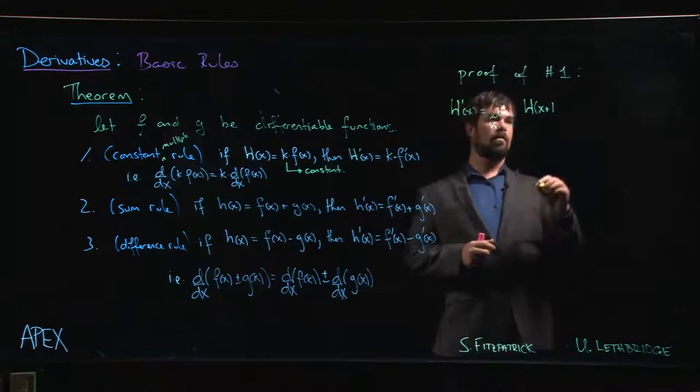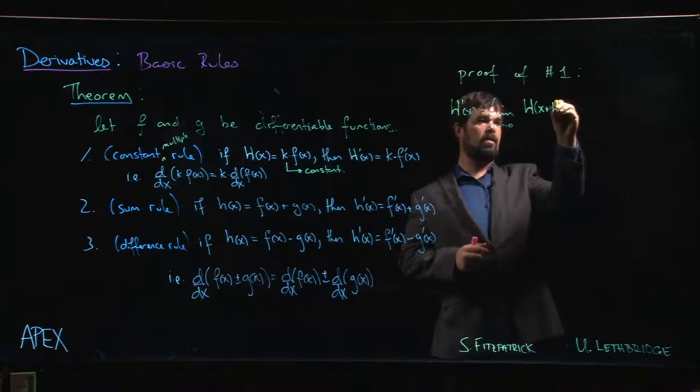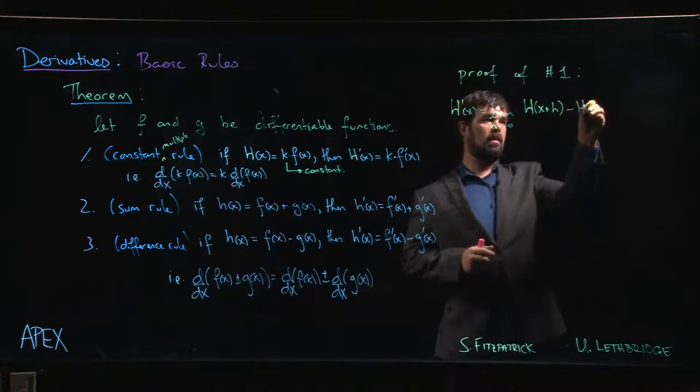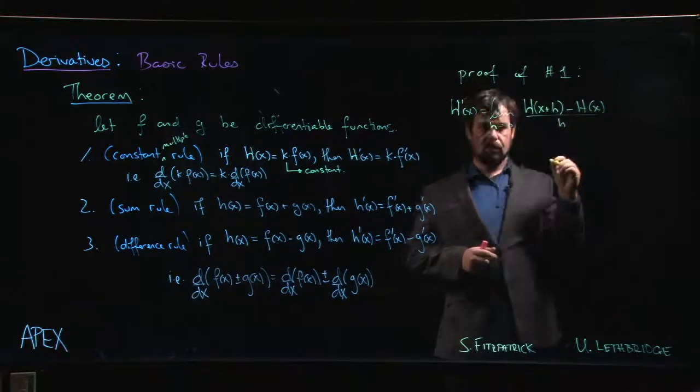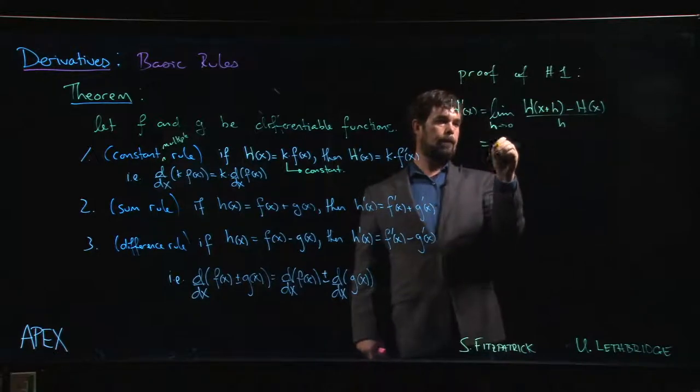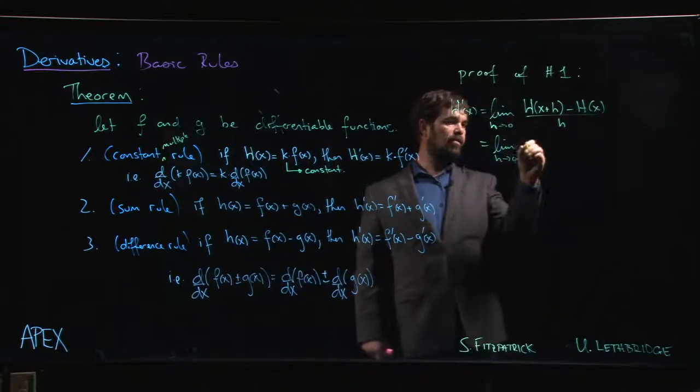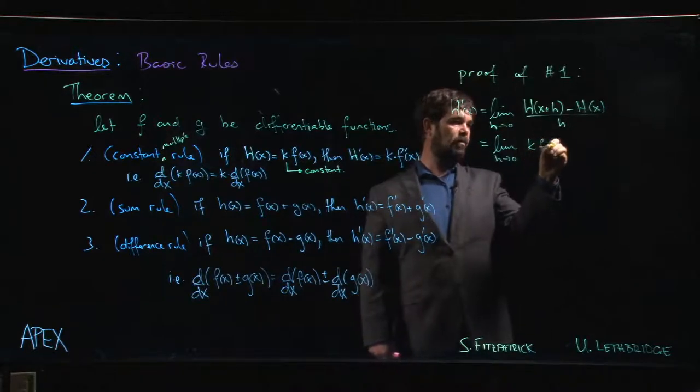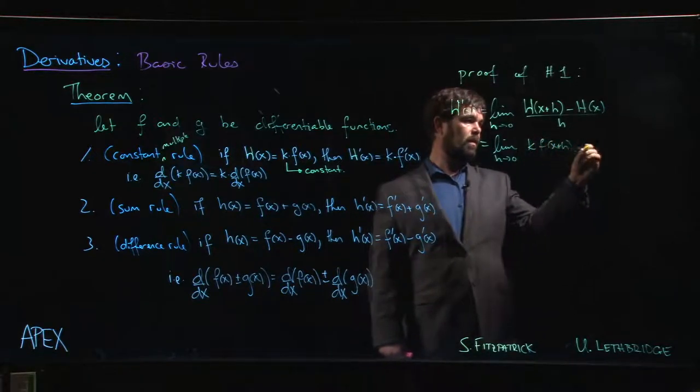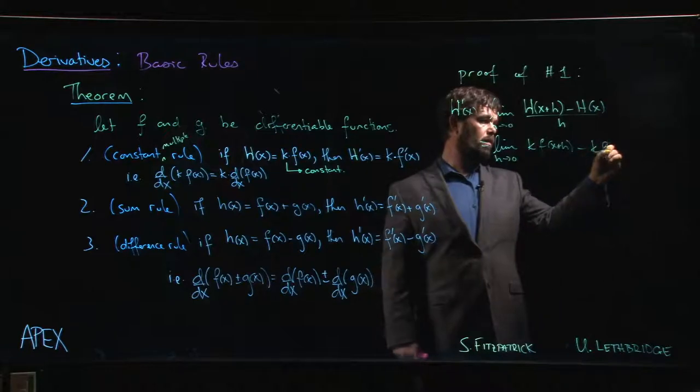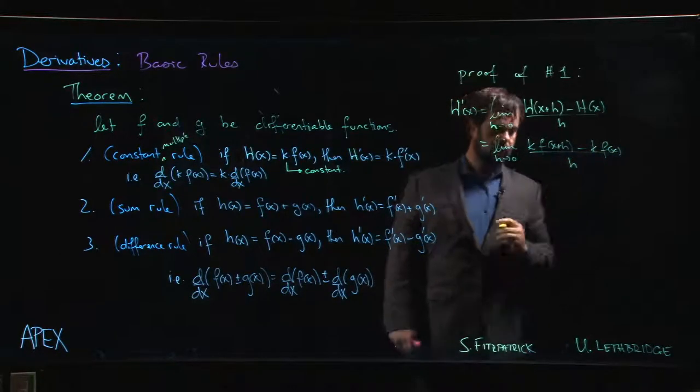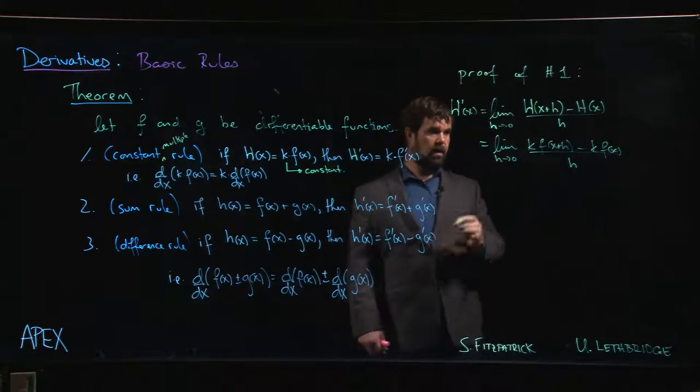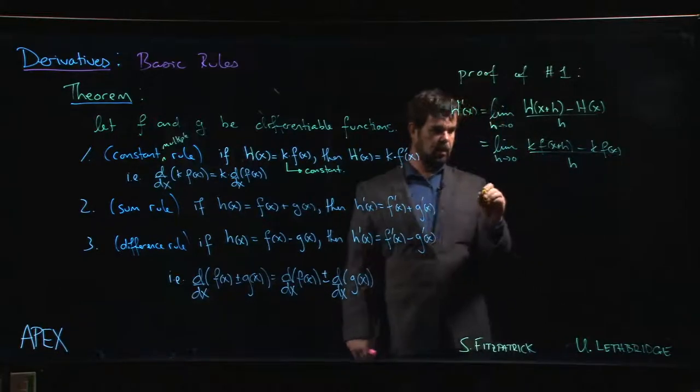So H prime is going to be H at x plus h minus H at x over h. But this is just k times f at x plus h minus k times f at x over h. And that k is a common multiple, so we can pull it out.